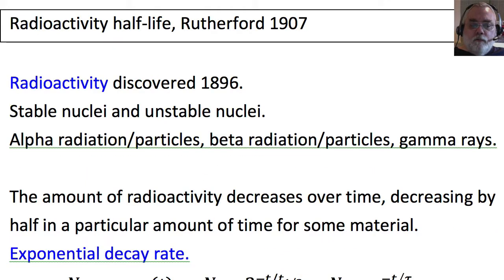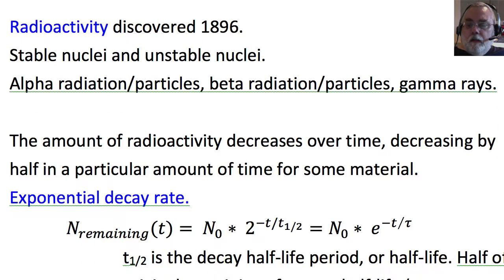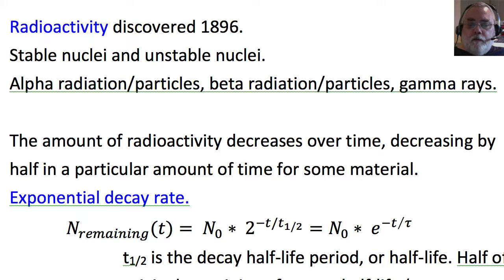Radioactivity was discovered in 1896. Marie Curie isolated radium in 1898. Marie Curie thought that radioactivity was due to the disintegration of atoms, and Rutherford believed that. We now know that there are stable nuclei and unstable nuclei, and nuclear radioactivity is due to the decay of unstable nuclei. However, nuclei were not known until Rutherford's work in 1911, which we will cover today.